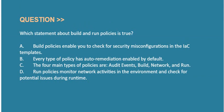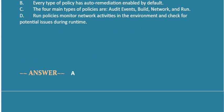Next question: Which statement about build and run policies is true? Option A: build policies enable you to check for security misconfigurations in the IaC templates. Option B: every type of policy has auto-remediation enabled by default. Option C: the four main types of policies are audit events, build, network, and run. Option D: run policies monitor network activities in the environment and check for potential issues during runtime. Correct answer is Option C. Thank you.